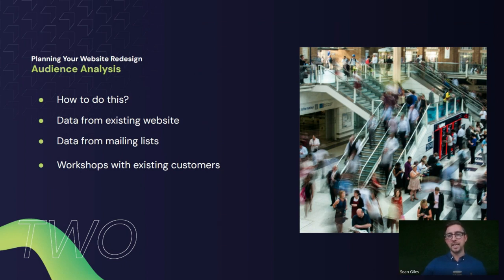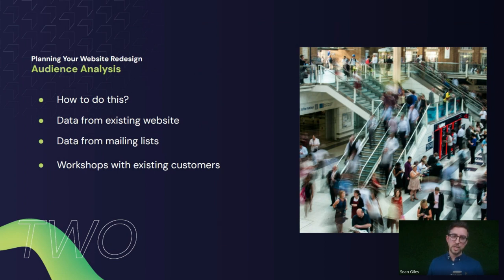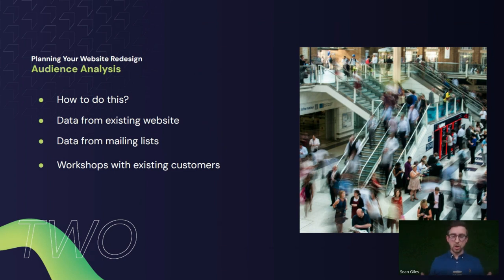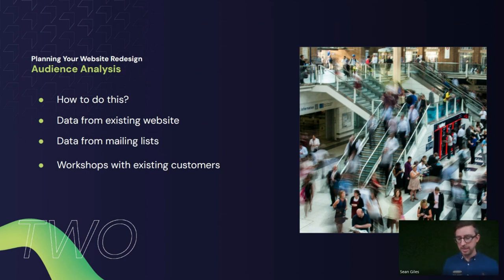You can use data from your existing website. With tools like Google Analytics and HotJar, you can understand generally what users are coming to the website for, what pages they're trying to access, and what content they're trying to get to. With HotJar and Clarity, you can see how they're actually interacting with the website — where they're scrolling, where they're hovering their mouse — which we'll dig into a little bit later.